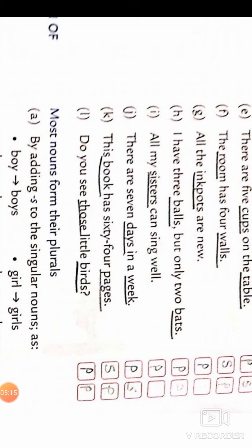My sister can sing well. Sister - only one noun in this sentence, it's singular. There are seven days in a week. Days is plural, week is singular. This book has 64 pages. Book is singular, pages is plural.